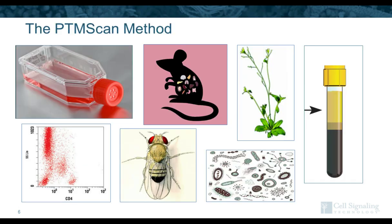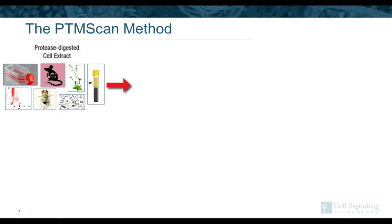We take these specialized antibodies and use them in a flexible method with respect to types of input material. We can do PTM scan on cell lines, tissues, plant material, whole organisms, microbial samples, primary or sorted cells, and even serum or plasma. One of the first things we do is digest the peptides — everything we're doing is at the peptide level, not at the level of proteins or complexes. We enrich with one or more specialized PTM motif antibodies, run the mass spec, get our peptide identifications, and then perform quantification and data analysis.